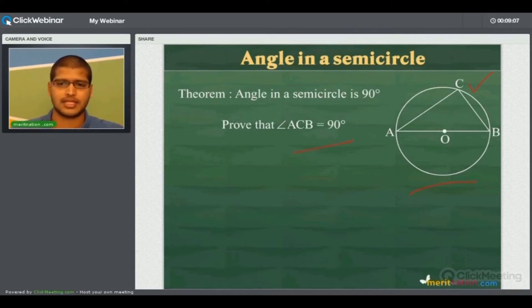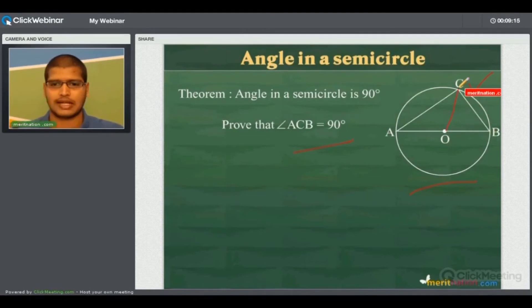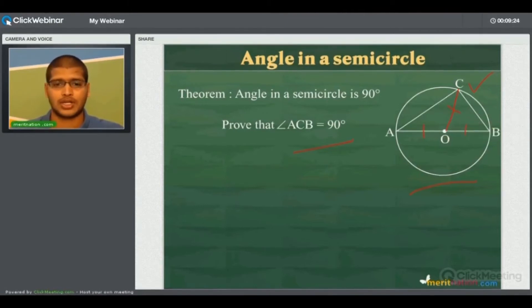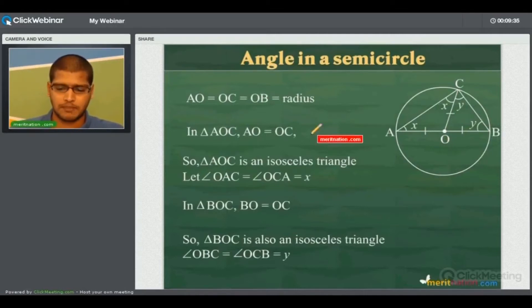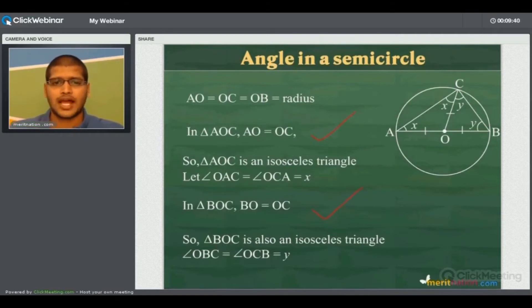We need to prove that angle ACB equals 90 degrees. Now join the center O with point C on the semicircle with a straight line. From this we can say that OA equals OC, OC equals OB, and all three are equal to the radius of the circle. Since OA equals OC and OB equals OC, we can say that triangles AOC and BOC are both isosceles triangles.